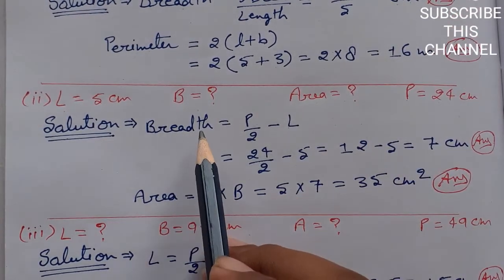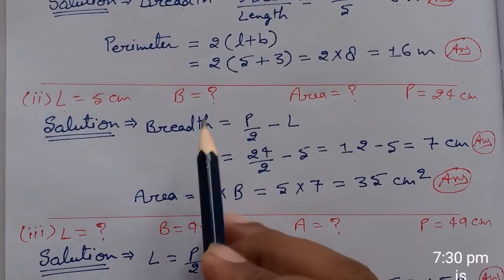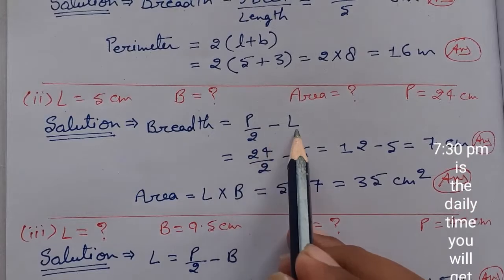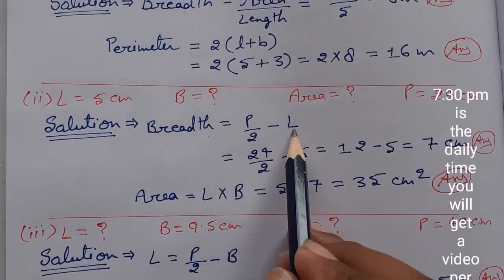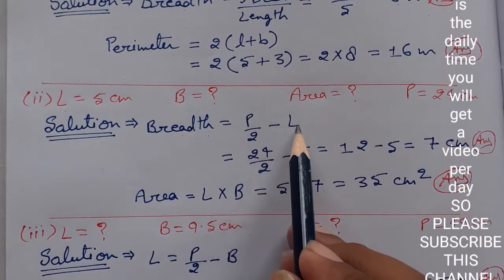So what should we do? At first, we need to find breadth with the help of perimeter and length. So we will have to take the formula: breadth equals perimeter upon 2 minus length. This is a formula in which we take the perimeter, divide by 2, and subtract the length.